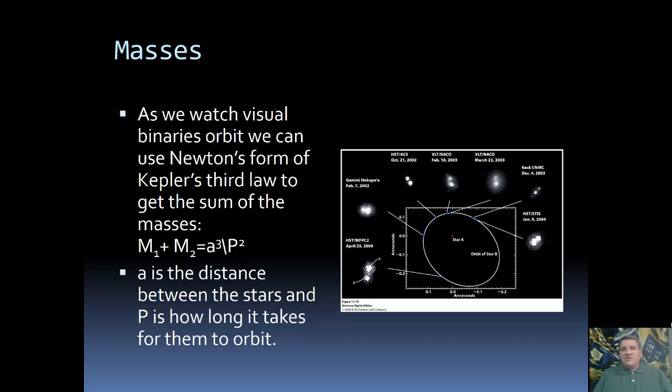Well, as we watch these visual binaries orbiting, we can use Newton's form of Kepler's third law to determine the sum of the masses. So the mass of both stars altogether, M₁ + M₂, is going to be related to their semi-major axis cubed and their sidereal period squared. So a is the distance between the stars, and P is how long it's going to take for them to orbit around each other. Now, that is only the sum.